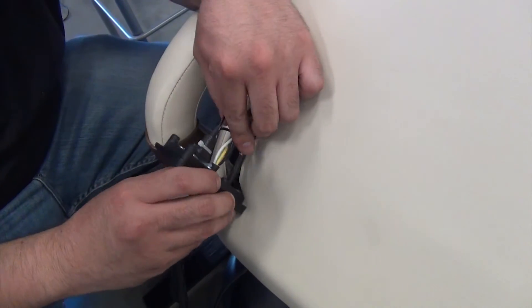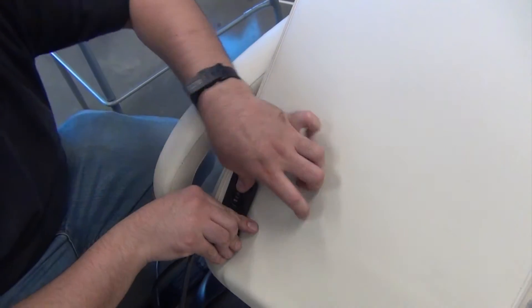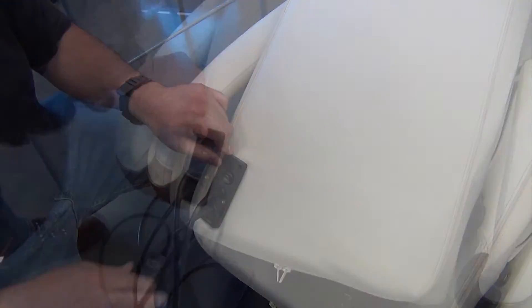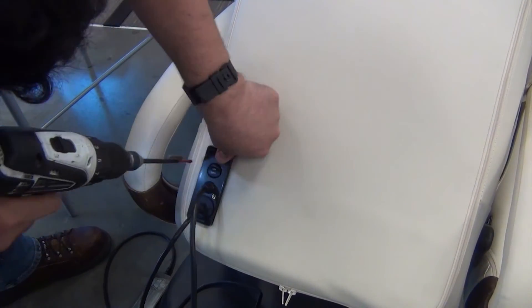Slide the tab on the lower edge of the power panel under the chair frame. Then, pushing the power panel cables into the backrest, lower the upper edge of the panel into position. Replace the two screws to secure the power panel to the chair.